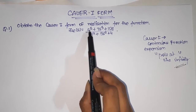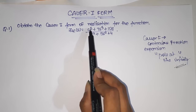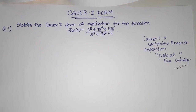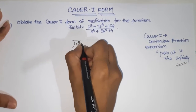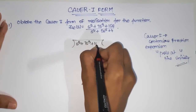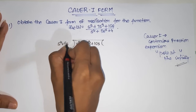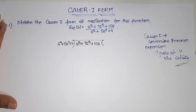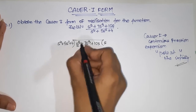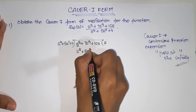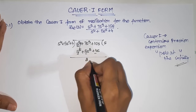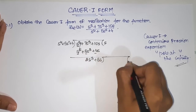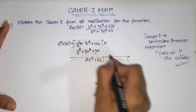As you can see here, the degree of numerator is greater, so we can directly go for fraction expansion. We divide: s⁵ + 7s³ + 10s divided by s⁴ + 5s² + 4. To get the first term, we multiply by s, giving s⁵ + 5s³ + 4s. Subtracting, we get 2s³ + 6s.